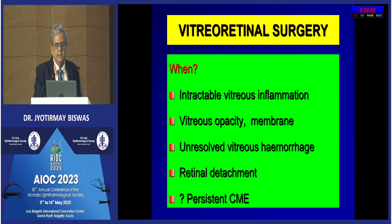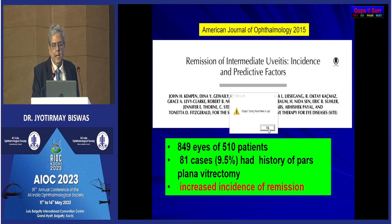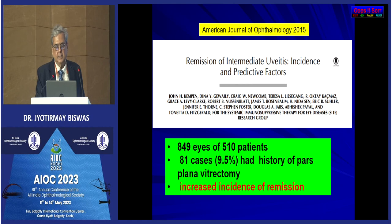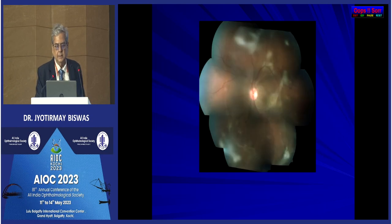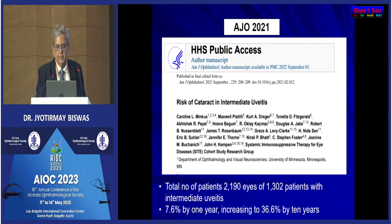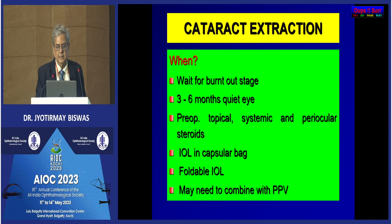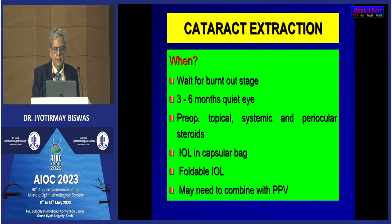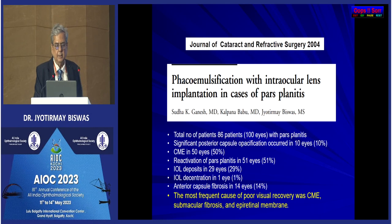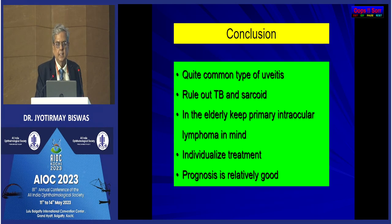Vitreoretinal surgery is required for intractable vitreous inflammation, vitreous opacity, and unresolved vitreous hemorrhage. In the SITE study, 89.5 percent of cases had vitrectomy done and had increased incidence of remission. Complicated cataract is another complication — 7.6 percent by one year, increasing to 36.6 percent by 10 years. At least three to six months of quiet eye preoperatively is required. IOL in the capsular bag may need to be combined with pars plana vitrectomy. Our data showed cystoid macular edema, submacular fibrosis, and epiretinal membrane as causes of poor visual recovery.